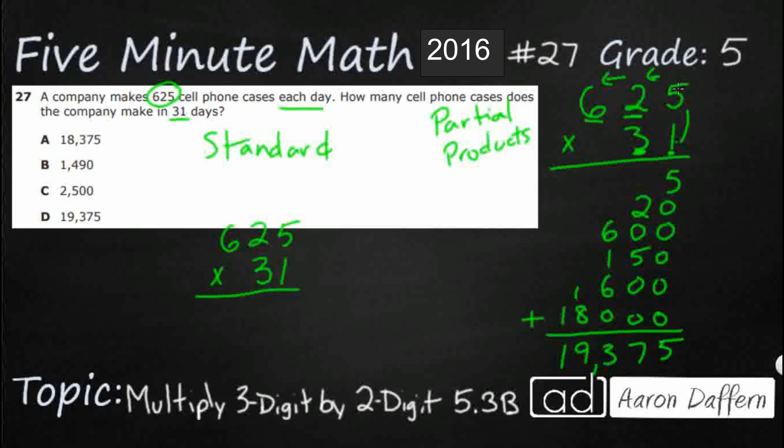So what we do is we take this 1 and we multiply it by the 5. If we needed to regroup, we would, but we don't have to. So we're going to multiply the 1 by the 2, put it right there. And then 1 by the 6, put it right there. We would regroup if we need to, but we're multiplying by 1. No need to regroup. So the 625 gets us what we got right here.